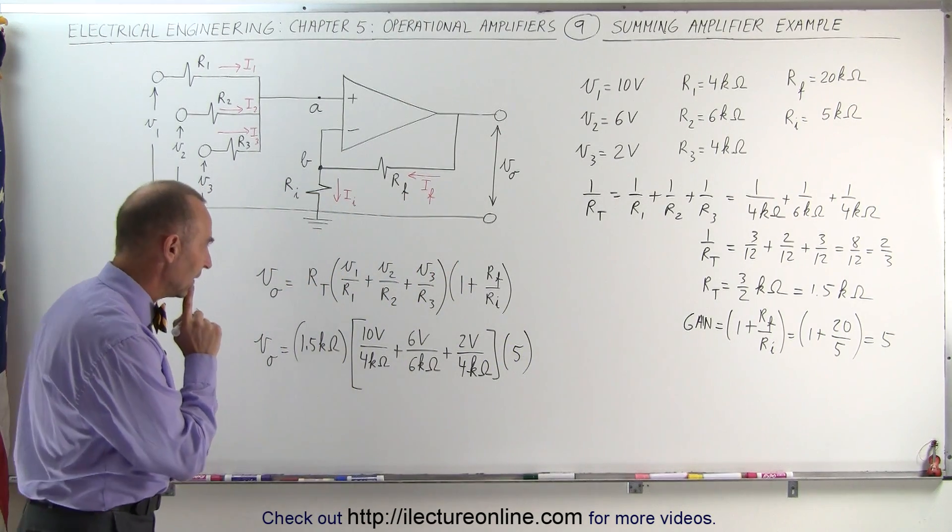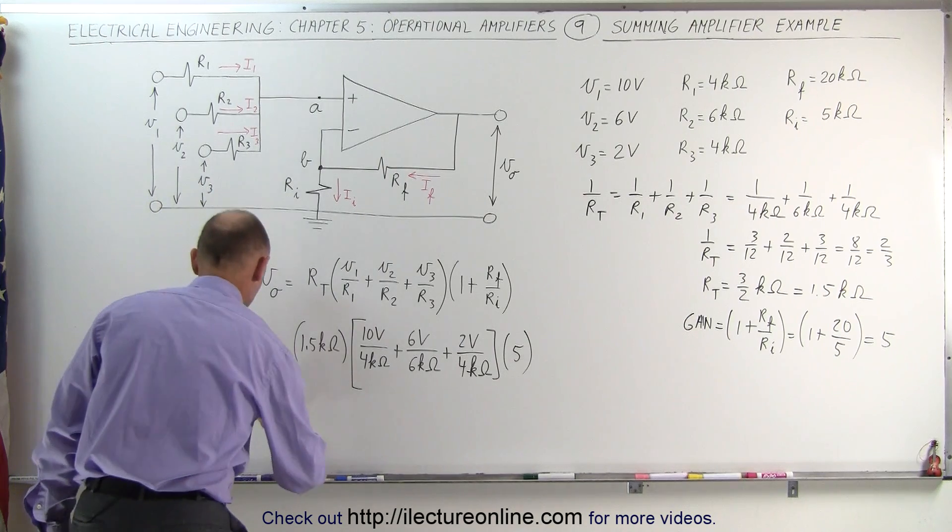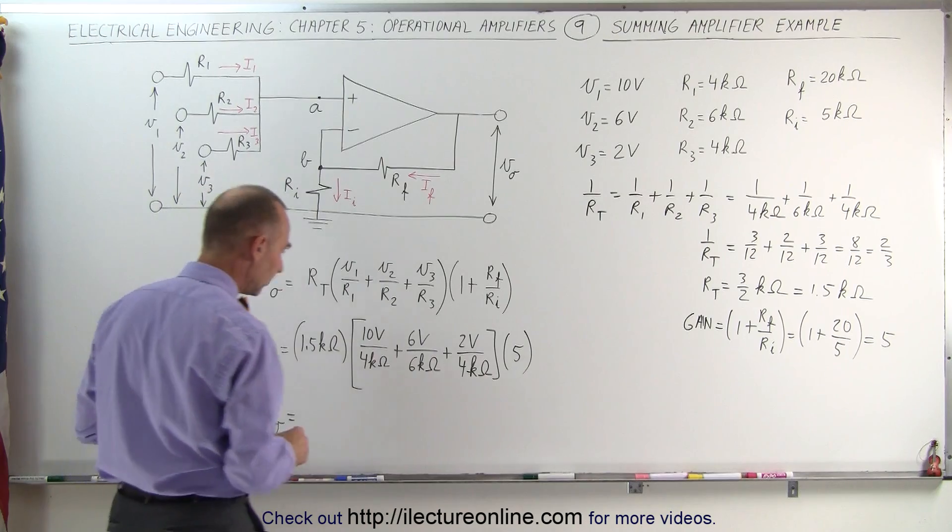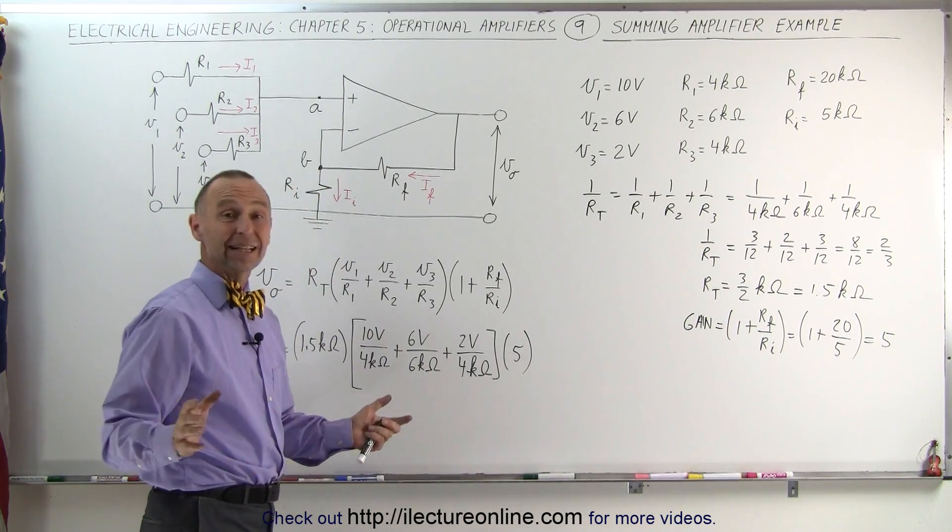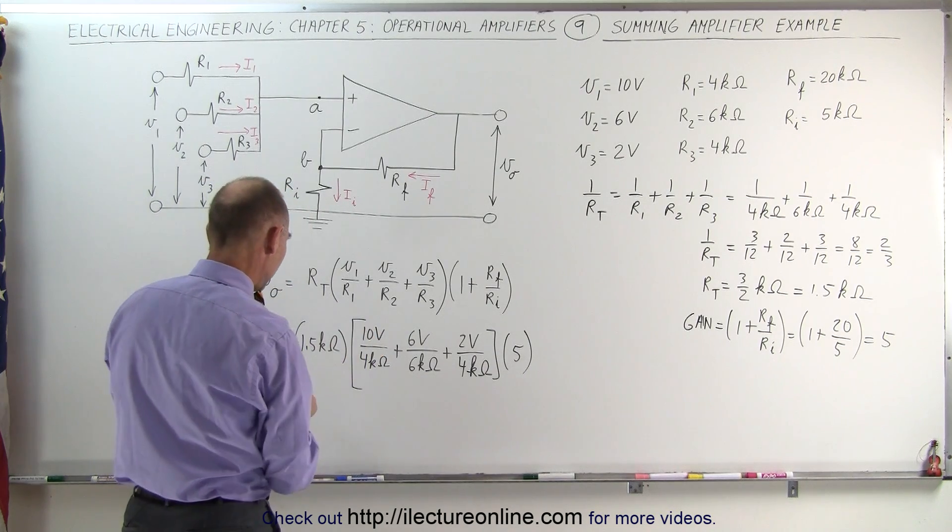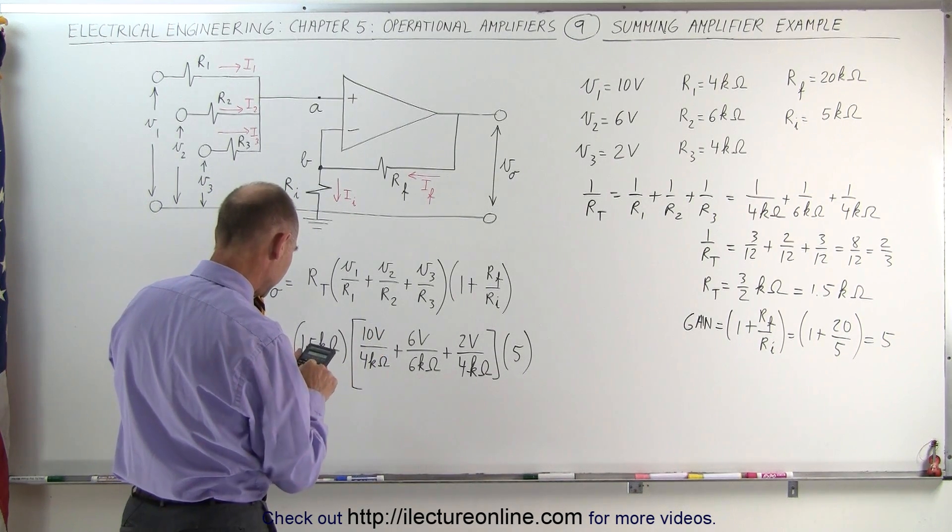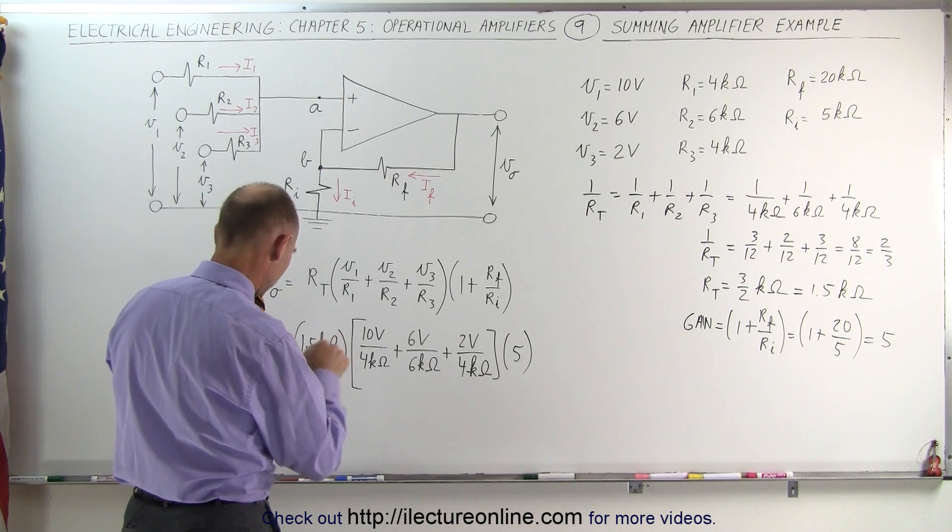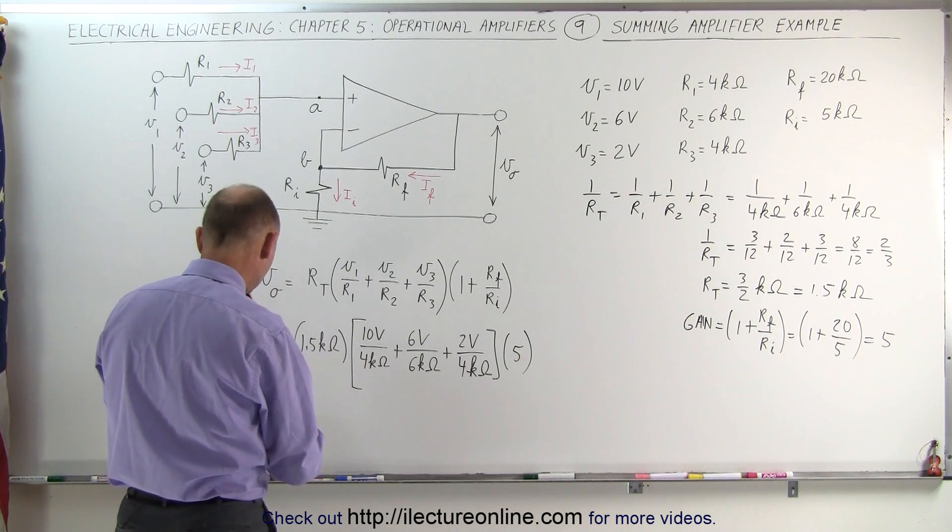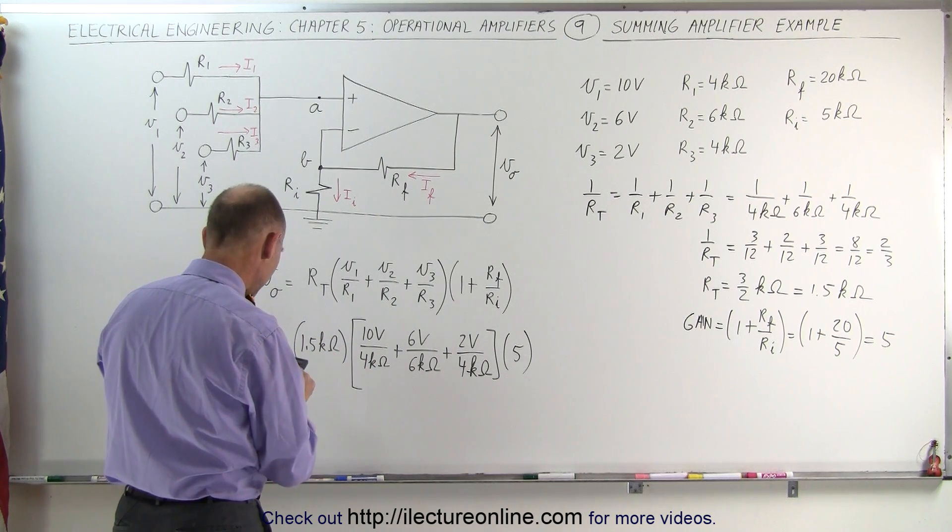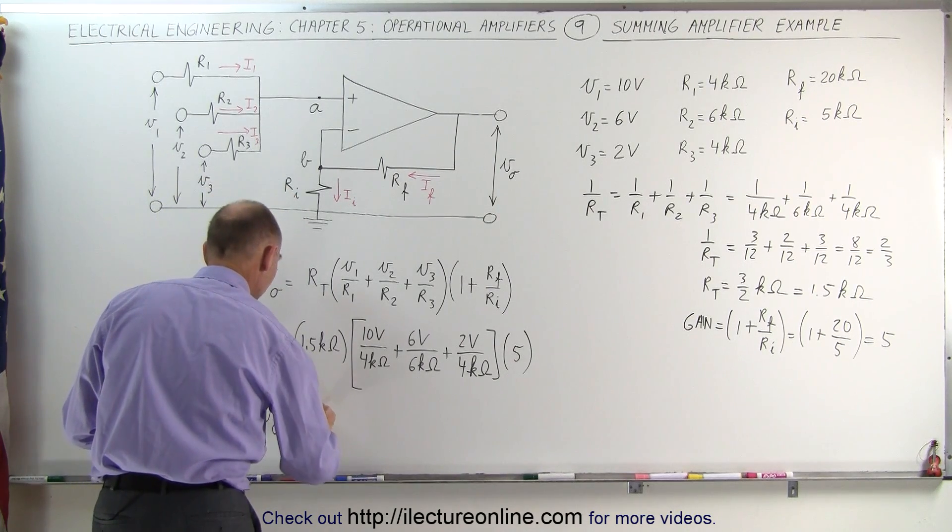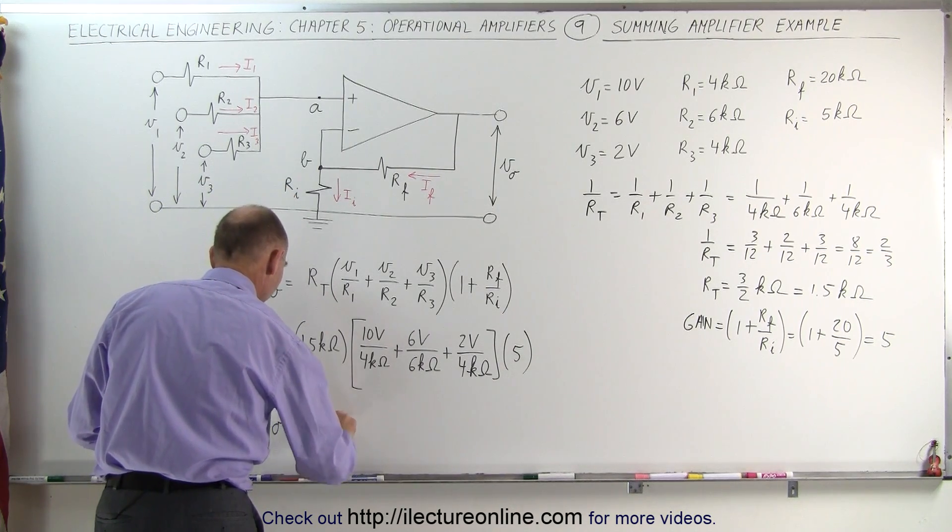All right. So now we have to multiply everything together and see what we get. The output voltage is equal to, I think I need a calculator for that. Let me see. So first of all, 10 divided by 4, that's 2.5, plus 1, plus 0.5. That's 4, multiplied times 1.5, and multiplied times 5, and I get 30. All right, so this is equal to 30 volts.